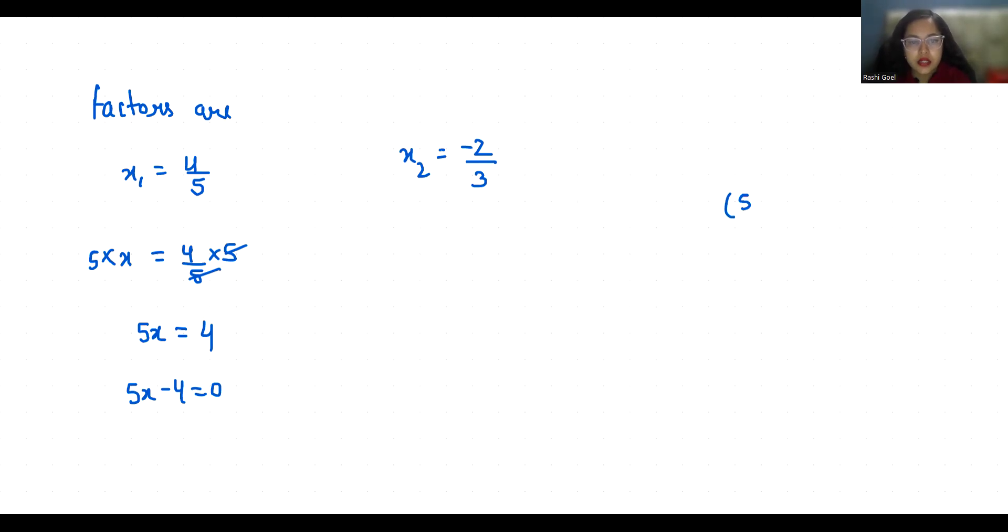And the second is 3x - 2, so 3x - 2 = 0. These are the two factors.